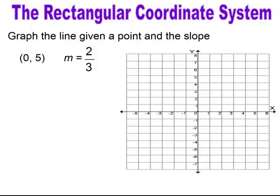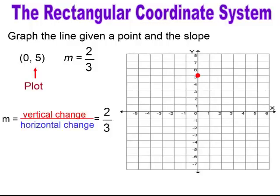Pause and try. Again: plot the point, use your slope — vertical change over horizontal change, because you have a fraction. Because it's positive, your vertical change will go up 2, and your horizontal change will go over 3 to the right. Plot your point and graph the line.